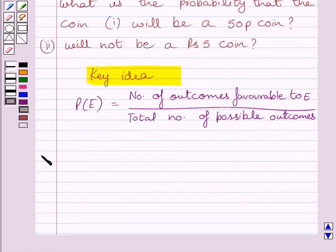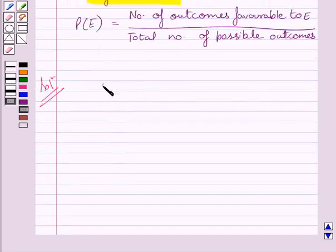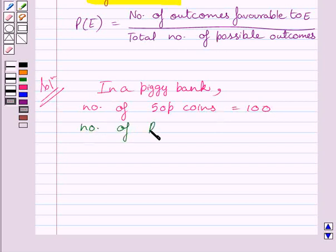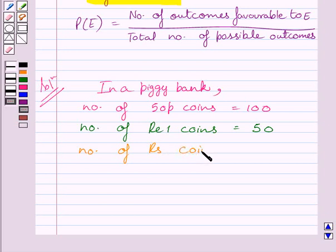Let us now start with the solution. We know the number of 50 Pesa coins in the piggy bank is equal to 100. Number of Rupees 1 coins is equal to 50. Number of Rupees 2 coins is equal to 20. And number of Rupees 5 coins is equal to 10.